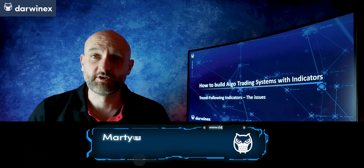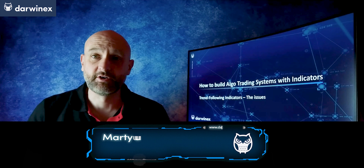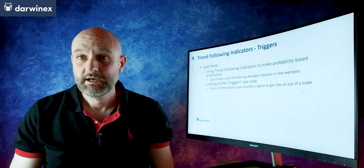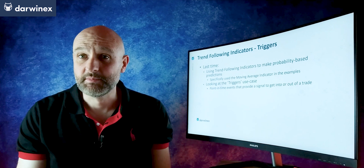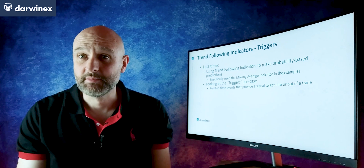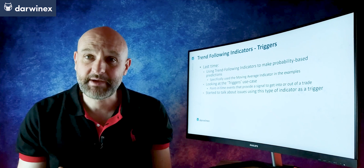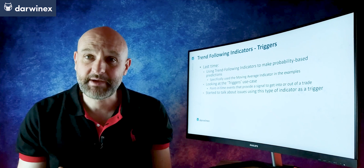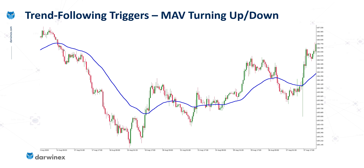So last time, in the introduction to trend-following indicators, we used the moving average — which is probably the most common type of trend-following indicator — as our example. And specifically, we looked at its use as a trigger, so as a mechanism to help inform trade entry and trade exit.